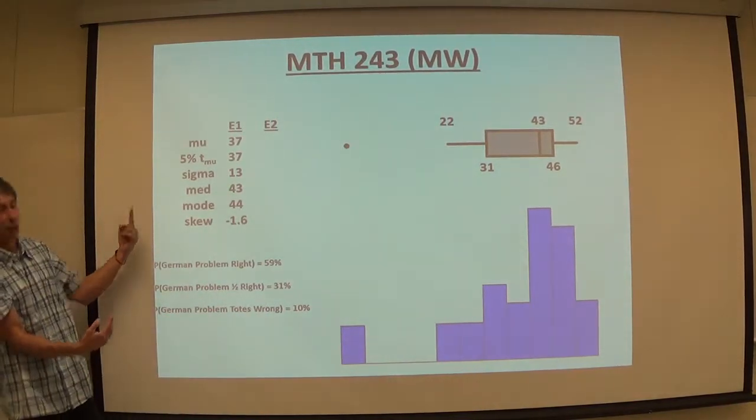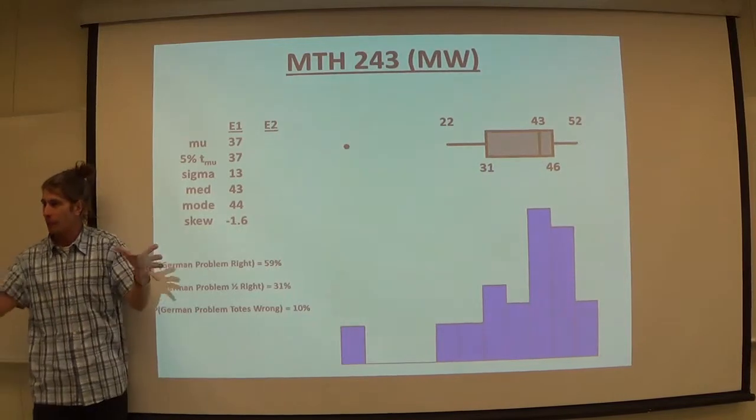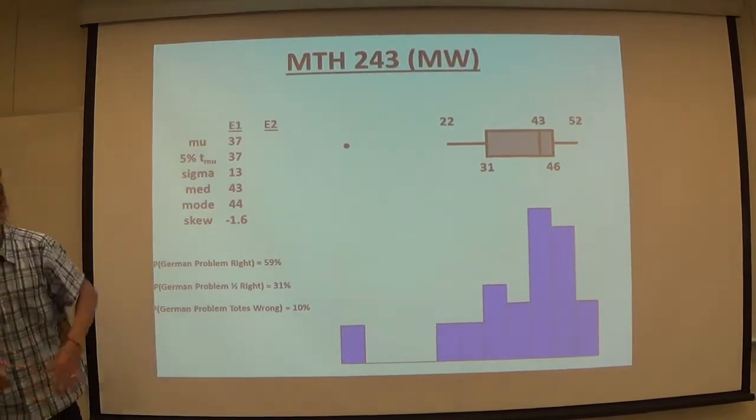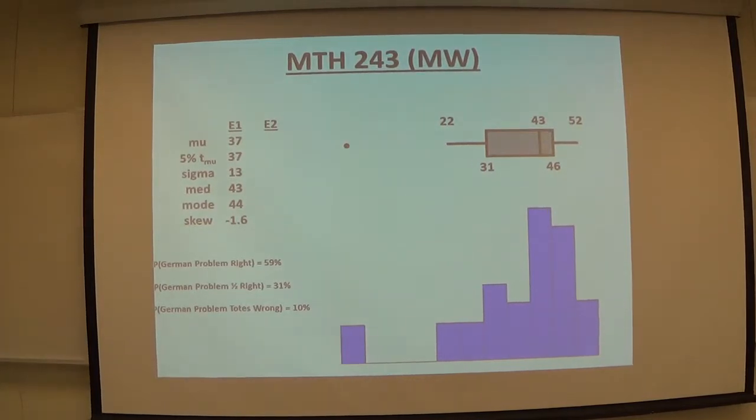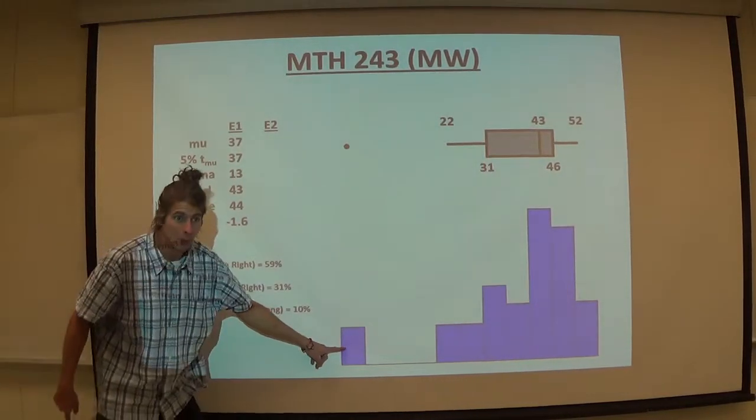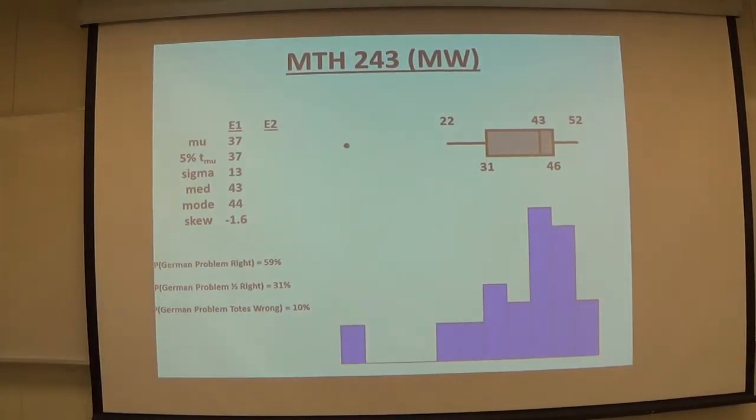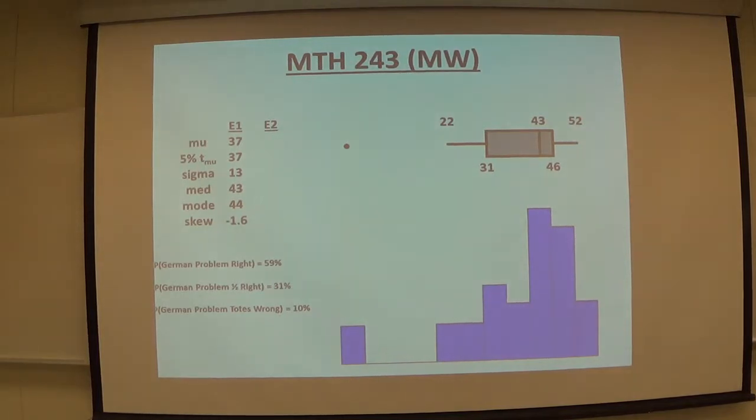Now negative just means that most of the data is over here and the average pulls back here. You can see that in the chart. I call you mu instead of x bar because you're my entire population of grades. Your average was a 37 but your median was a 43. How can that be? Because some folks got zero.